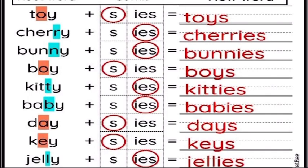For example: 'toy' — toy/toys. We don't change the 'y' because before the 'y' we have a vowel. But for 'cherry' — before 'y' we have 'r', and 'r' is a consonant, so we change 'y' to 'i' and add 'es': cherry/cherries.